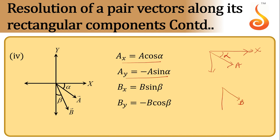B subtends an angle beta with the negative y-axis. The x component is positive while y component is negative. Hence, By is equal to minus B cos beta and Bx is B sin beta.